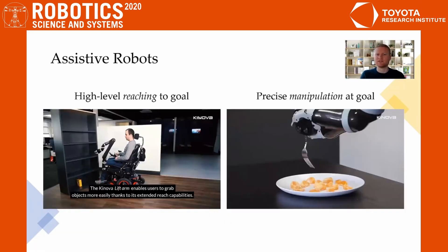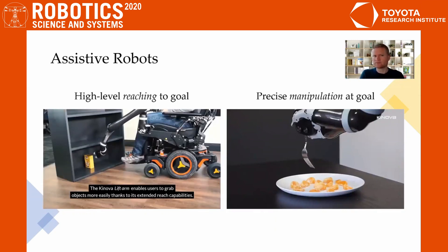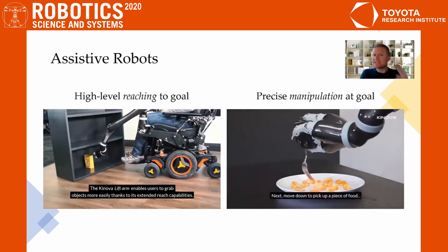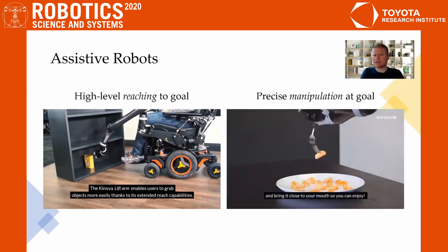When people living with physical disabilities interact with assistive robots, such as wheelchair-mounted robotic arms, they're faced with two challenges. First, they need to control the high-dimensional dexterous robot to reach towards their desired goal. And second, once the arm gets to that goal, they need to precisely orchestrate the end effector to manipulate objects.